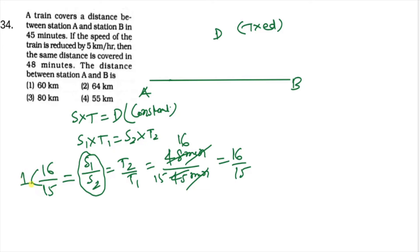This value is 16/15, which equals S1/S2. So the ratio S1/S2 is 16:15. The gap between them is 1, but you need a difference of 5 km per hour. So multiply numerator and denominator by 5.